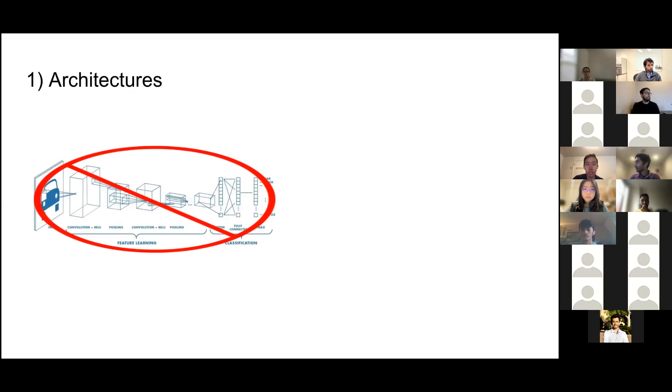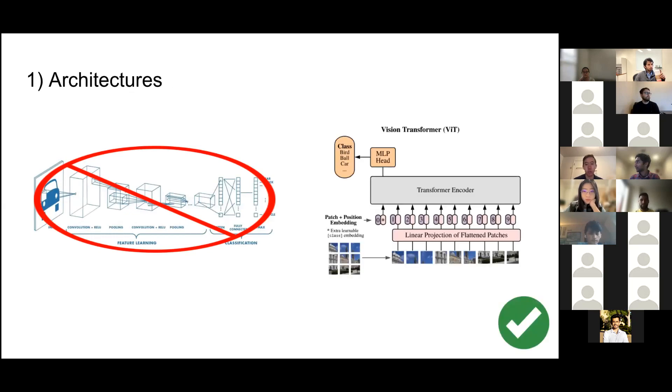The first difference is in the architectures. Until recently, architectures in NLP and vision were quite different. Masked tokens and positional embeddings don't work well with CNNs, which was used predominantly in vision, but now with the advancement of vision transformers, this architecture difference can be solved.